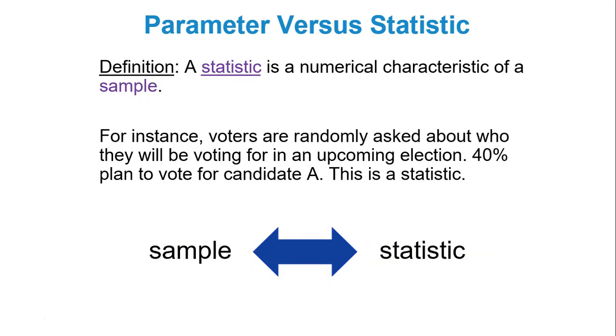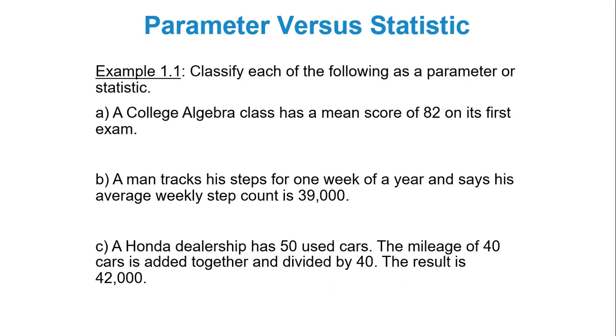A statistic is a numerical characteristic of a sample. So in other words, only some of the subjects from the population were used to create the piece of data or the numeric description. For instance, voters are randomly asked. That's your key there that you're dealing with the sample. You're taking all the voters, the population of voters, you're randomly asking some of them who they will be voting for in an upcoming election. 40% plan to vote for candidate A. This makes this a statistic because only some of the population was used. Meaning we had a sample. Meaning the calculation we get from that is a statistic. S and S.